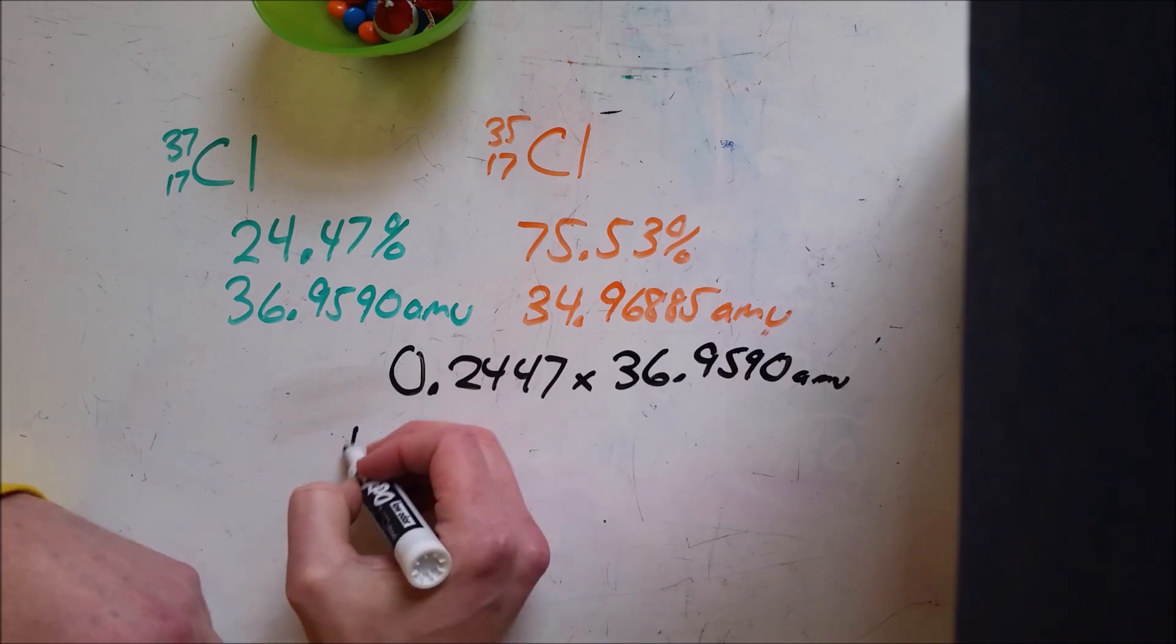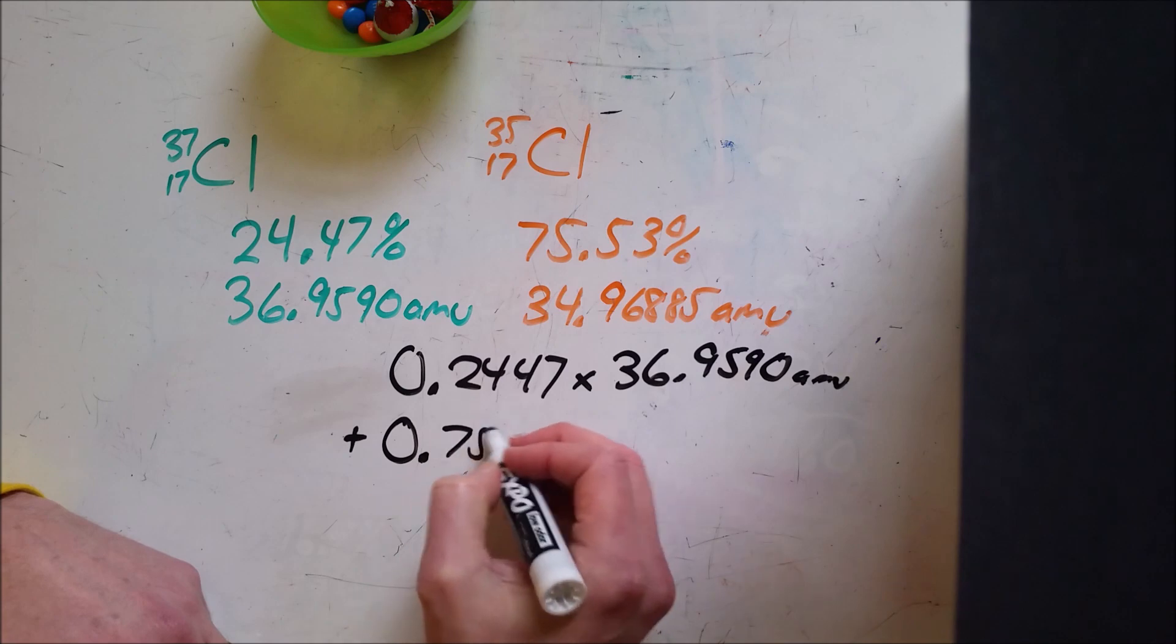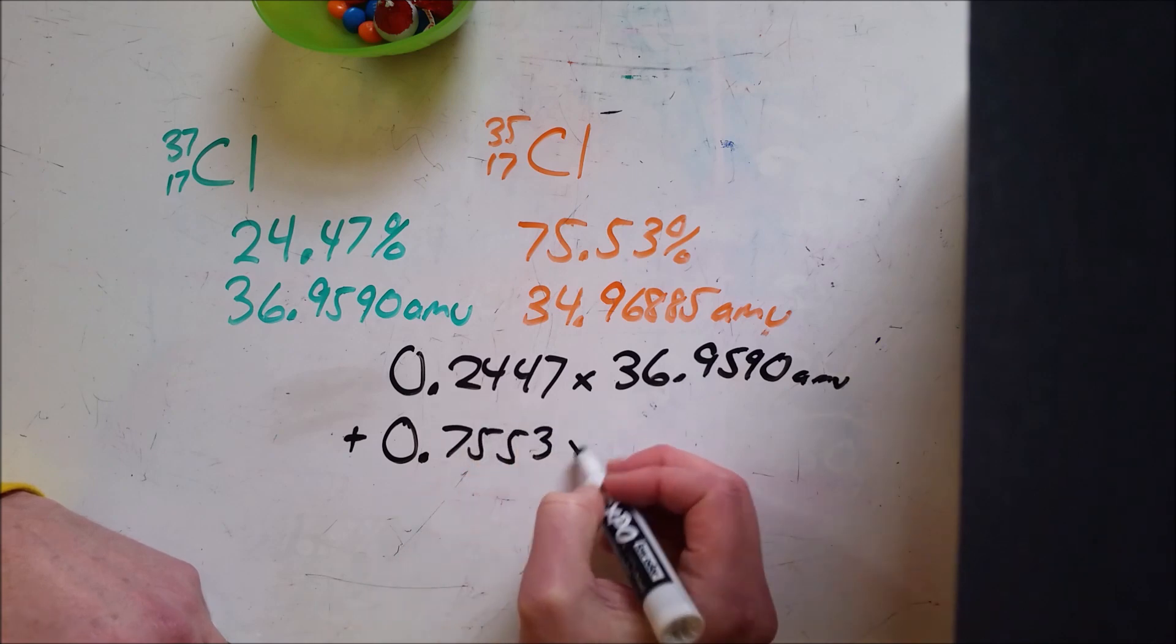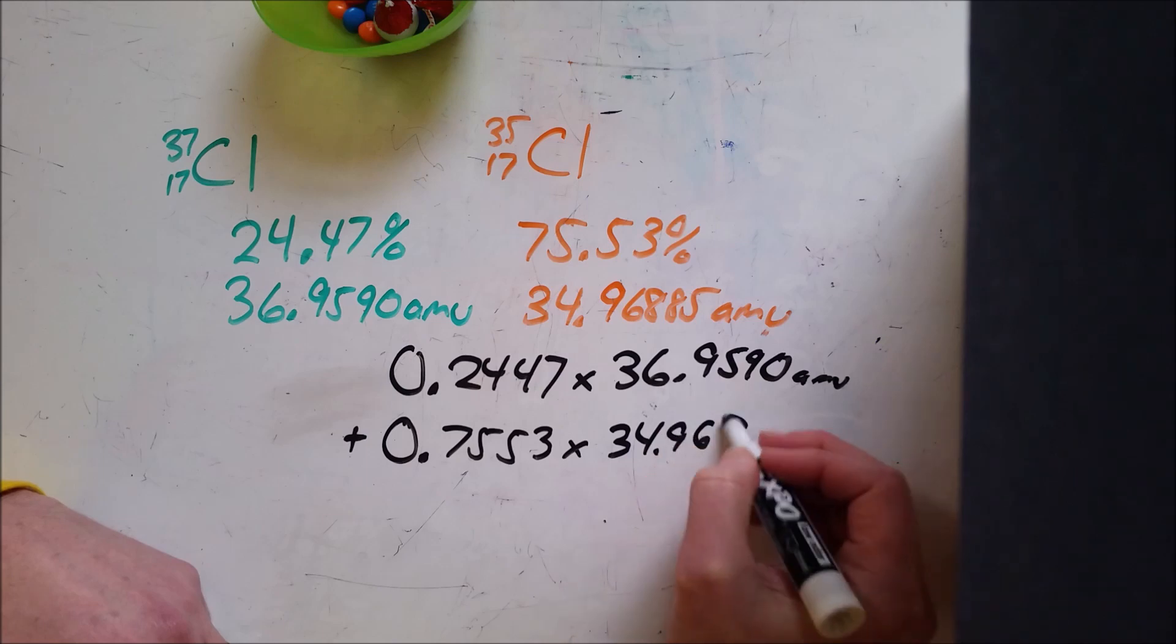And then I would add that to the same thing over here. I'm going to change that 75% to 0.7553. Multiply that by this 34.96885 AMU.